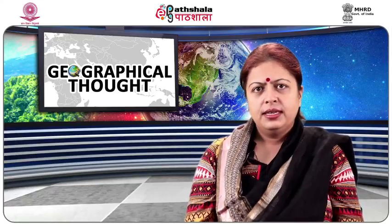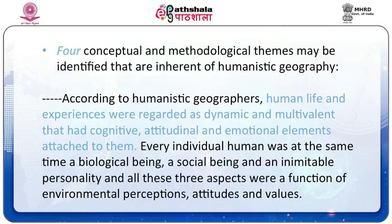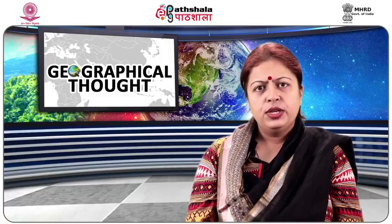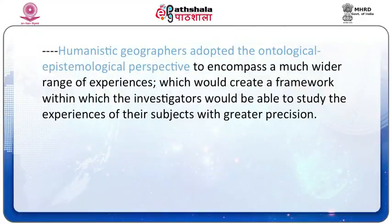As expressed in the words of Tuan, every individual human was at the same time a biological being, a social being, and a unique personality, and all three aspects were a function of environmental perceptions, attitudes, and values. Secondly, since human experiences were indefinable, humanistic geographers departed from the scientific methods employed under the positivist regime — in which everything was to be explicated and verified empirically through statistical techniques. On the contrary, humanistic geographers adopted the ontological and epistemological perspective to encompass a much wider range of experiences, creating a framework within which investigators could study the experiences of their subjects with greater precision.